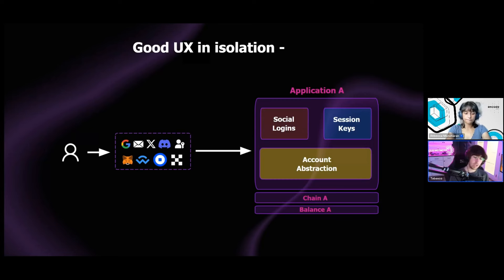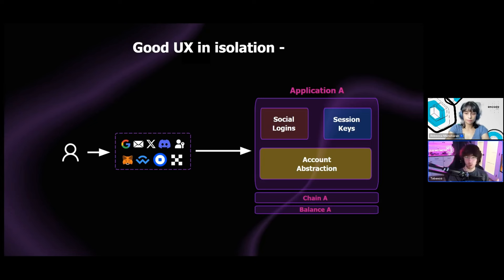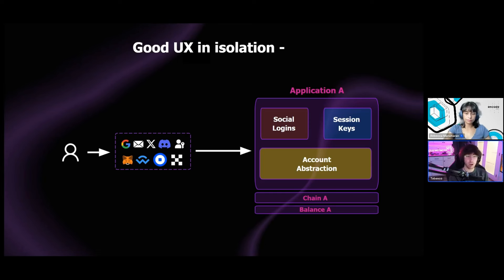Let's talk about the problem of the ecosystem today and why Web3 needs Chain Abstraction. Chain Abstraction is always positioned as an answer to poor UX in the ecosystem. But what I want to stress is that actually, if you look at UX in Web3 and how it has evolved over time, we're actually in a great spot with UX within individual applications. We've had great technologies emerge over the past few years — like account abstraction, social logins, and session keys — that have basically enabled fantastic UX, things that feel like Web2, but in the confines of a given application.